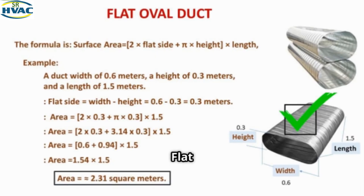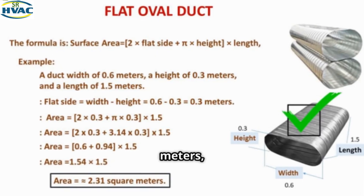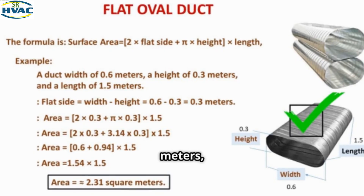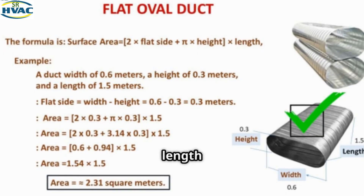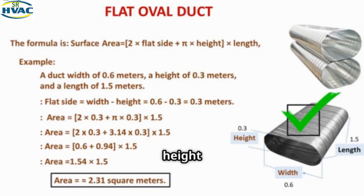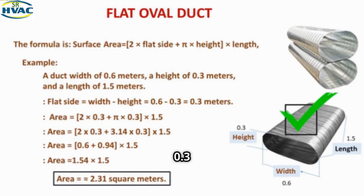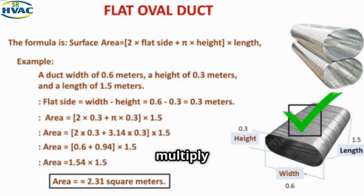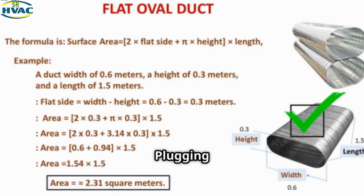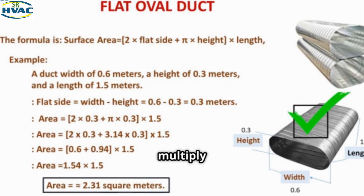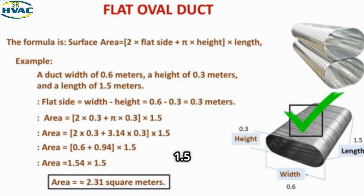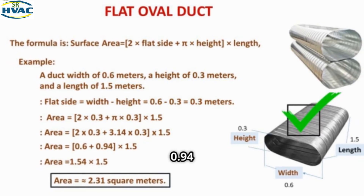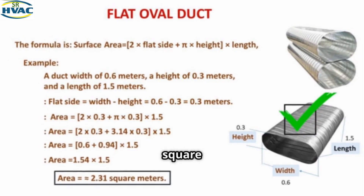For a flat oval duct, assume a width of 0.6 meters, a height of 0.3 meters, and a length of 1.5 meters. First, determine the flat side length: flat side = width − height = 0.6 − 0.3 = 0.3 meters. The area formula is: area = 2 × flat side + π × height × length. Plugging in the values: area = (2 × 0.3 + π × 0.3) × 1.5 = (0.6 + 0.94) × 1.5 = 2.31 square meters.